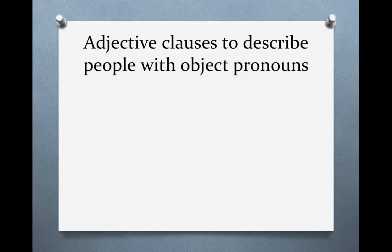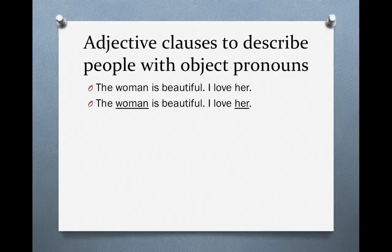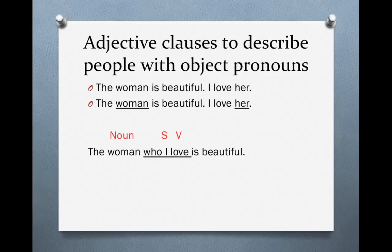Adjective clauses can describe people when you have object pronouns. Object pronouns are words like him, her, them, us, you, me. For instance: 'The woman is beautiful. I love her.' Her is an object pronoun referring to the woman. Now let's combine these two sentences into one: 'The woman who I love is beautiful.' We took the second sentence, replaced her with the relative pronoun who, put it at the front of the clause, and it becomes our adjective clause. Who is the relative pronoun. The subject of the adjective clause is I. The verb is love. And 'who I love' describes the woman.